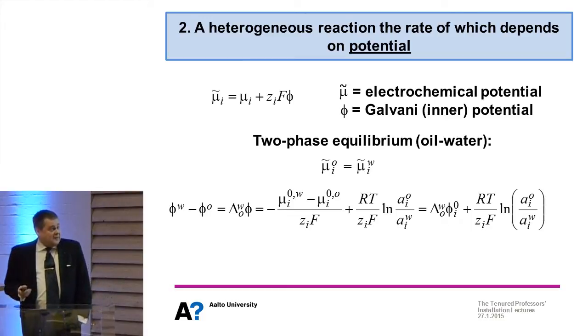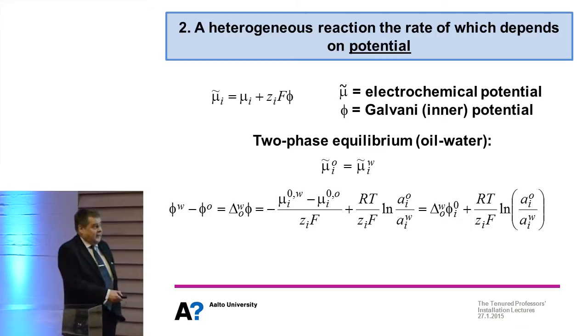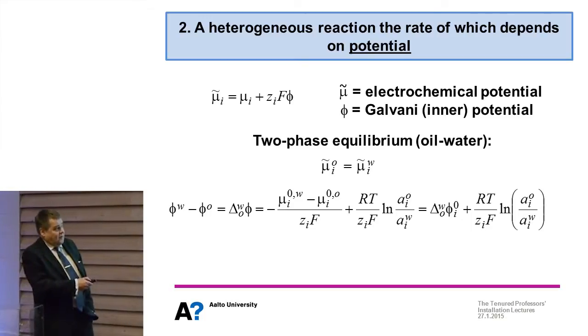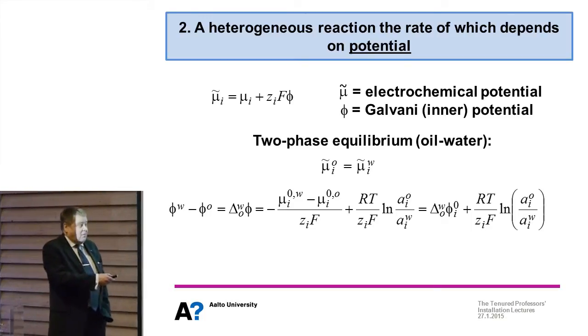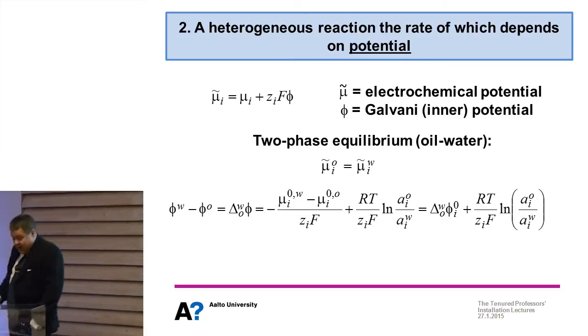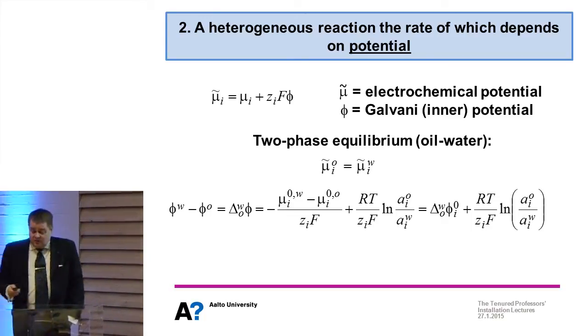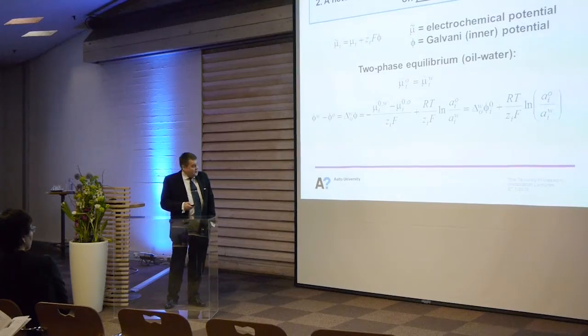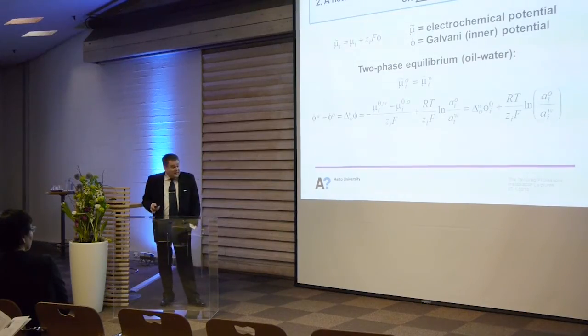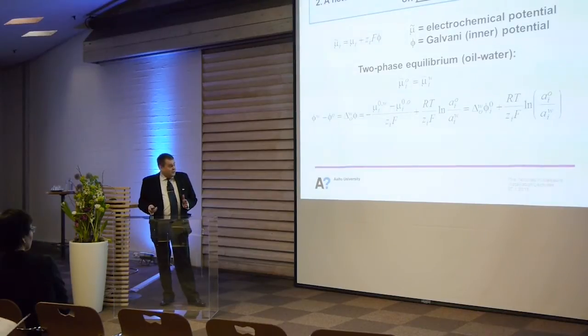If we expand this equation we get the very simple and familiar looking Nernst equation. There's a standard potential Δφ°, and then there's the ratio of the activities of that ion in the oil phase and water phase, which is the partition coefficient of that ion. This very simple equation is the key element of my talk.